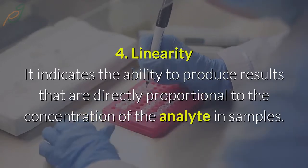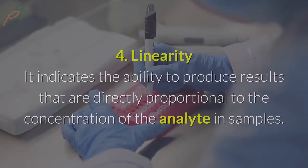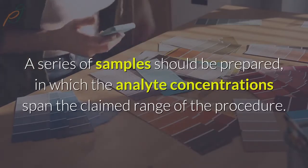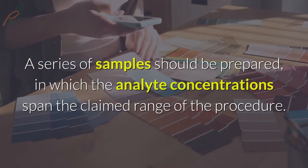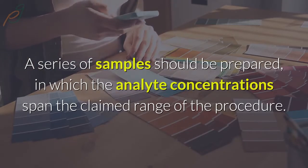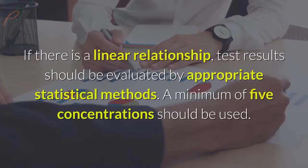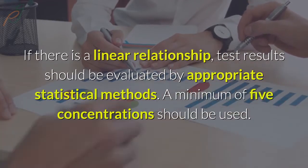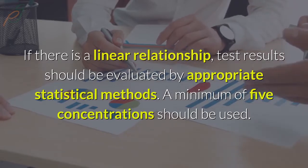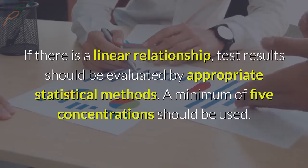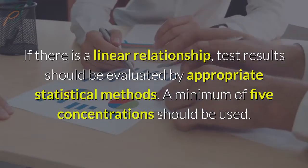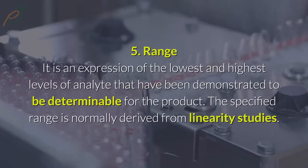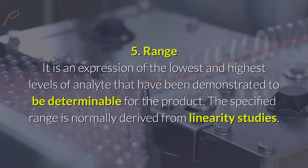4. Linearity: It indicates the ability to produce results that are directly proportional to the concentration of the analyte in samples. A series of samples should be prepared in which the analyte concentration spans the claimed range of the procedure. If there is a linear relationship, test results should be evaluated by appropriate statistical methods. A minimum of five concentrations should be used.